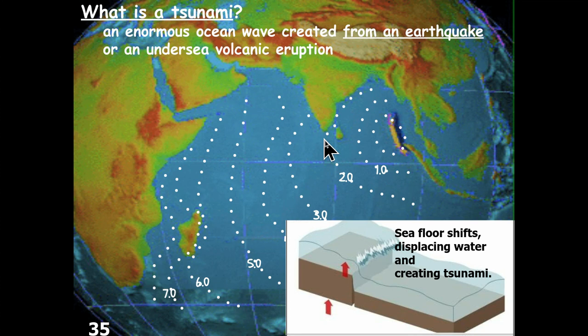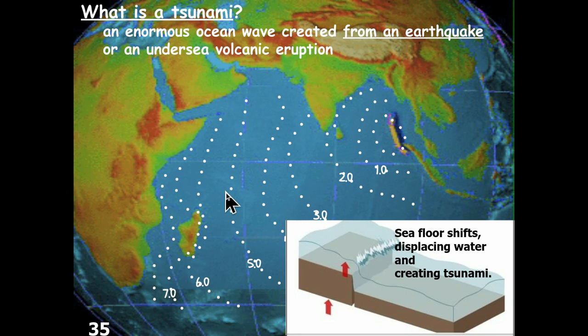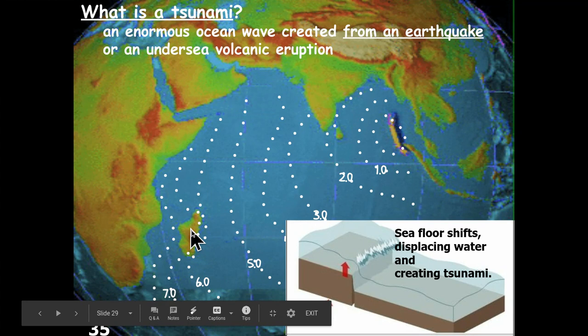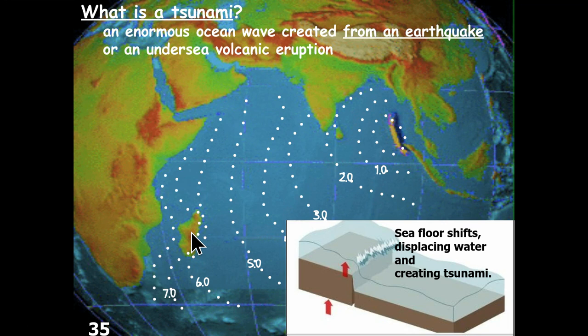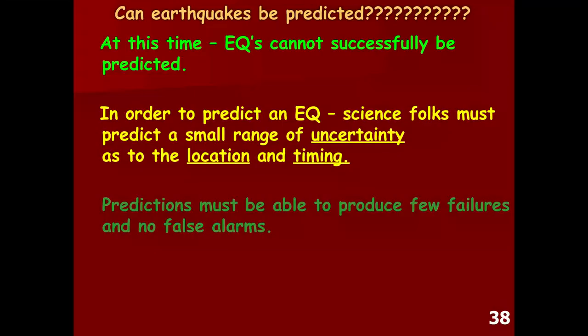The dotted lines on the map represent timelines — one hour, two hours, three hours and so on — showing how the tsunami waves spread across the entire ocean after being generated. Notably, as the waves approached Madagascar off the coast of Africa, they were bent and moved around the island. In other words, the waves were refracted around Madagascar — again demonstrating the principle of refraction we discussed with seismic waves.